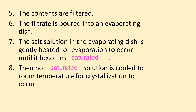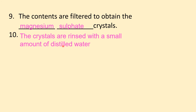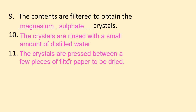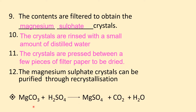The hot saturated solution is cooled to room temperature for crystallization to occur. The contents are filtered to obtain magnesium sulfate crystals. The crystals are rinsed with a small amount of distilled water and pressed between a few pieces of filter paper to be dried. Magnesium sulfate crystals can be purified through recrystallization. The chemical equation: magnesium carbonate reacts with sulfuric acid to produce magnesium sulfate, carbon dioxide, and water.